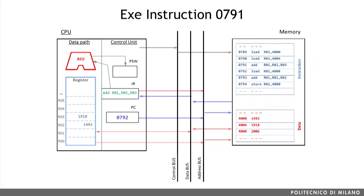This means that the control unit is passing the necessary information to the Arithmetic Logic Unit, or ALU, to perform the required operation — configuring the ALU to perform an add and passing the necessary values stored in the corresponding registers. Once the computation has been completed, the result is stored back in an ALU register, the program counter is updated with the address of the next instruction to be executed, and a signal is sent to the program status word register, which is a register that keeps track of the current state of the system.